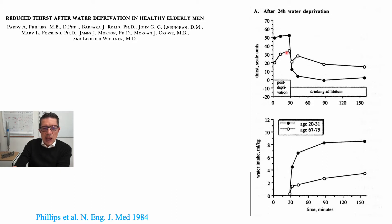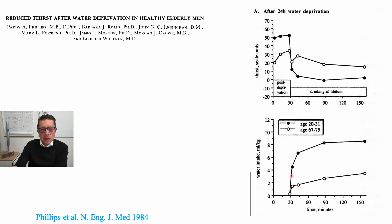As a response, when they are allowed to drink ad libitum, their thirst doesn't change that much. Even though they can drink as much as they want, thirst stays relatively higher than younger adults. Young adults get very thirsty, and when they drink, thirst gets suppressed to very low levels. Versus older adults — they don't get as thirsty, and when they drink, thirst doesn't seem to change that much. Younger counterparts drink more than three times the amount of water that older adults drink during about two hours post-dehydration.